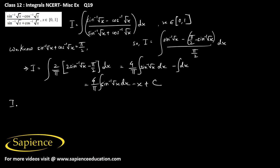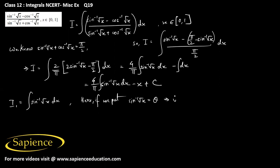Let's call this integral I1, which is the integral of sine inverse root x dx. Here if we put sine inverse root x equal to theta, then root x equals sine theta, and x equals sine squared theta. Therefore dx will be equal to 2 sine theta into cos theta d theta, which means it will be sine 2 theta d theta.